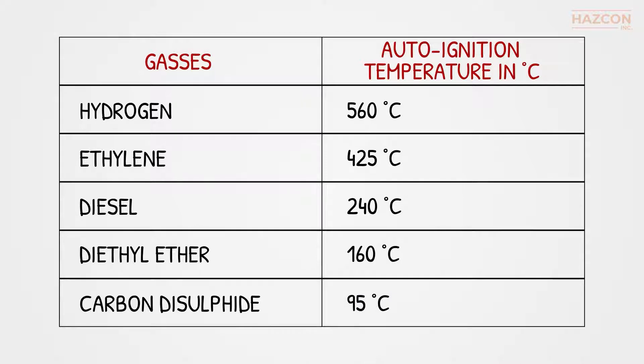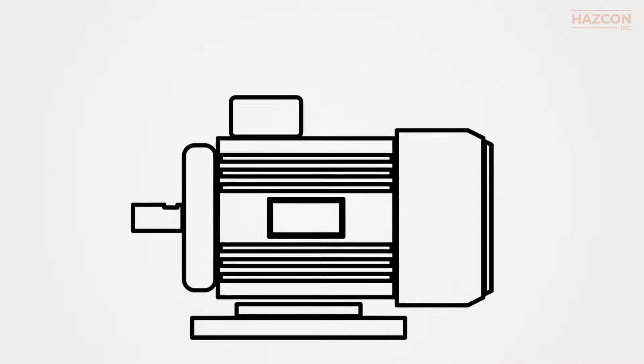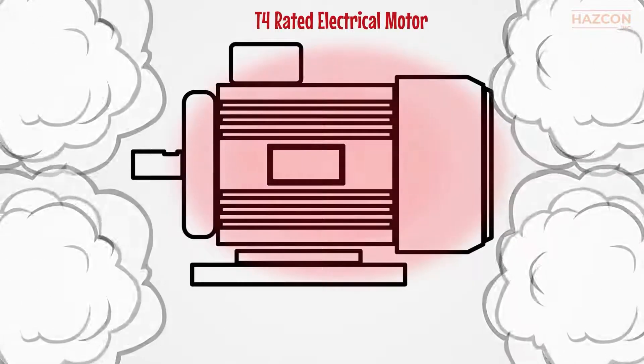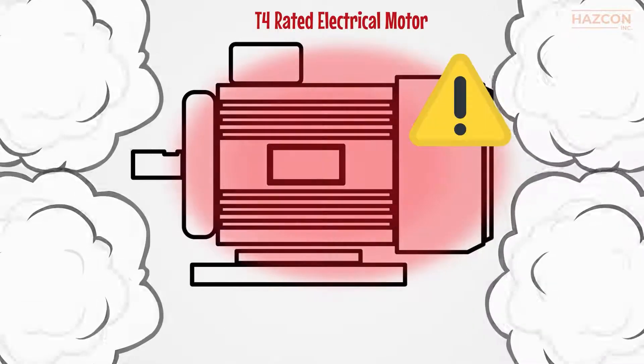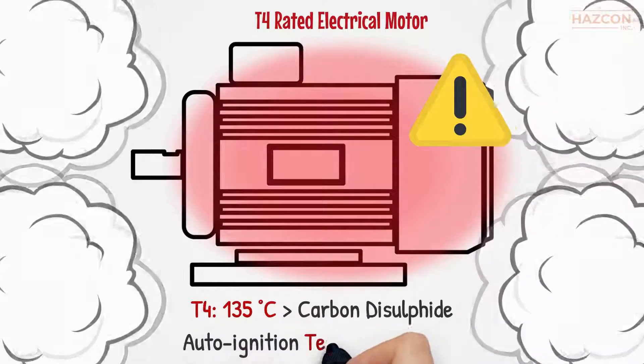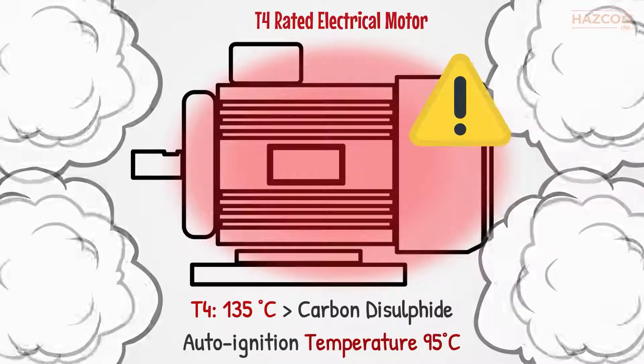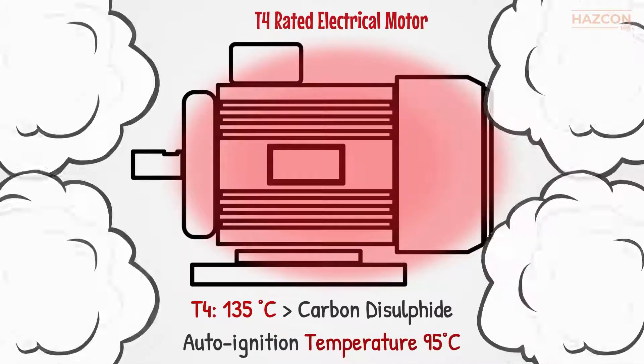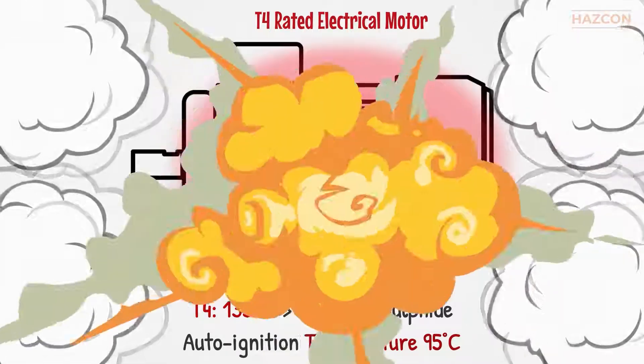Let's use an example to clarify these concepts. We have an electrical motor rated as T4 for installation in a hazardous location. If this motor were installed in a location in which carbon disulfide with an auto-ignition temperature of 95 degrees Celsius is present, the result would be an explosion.